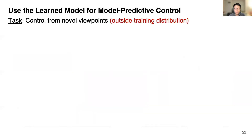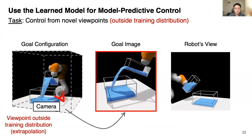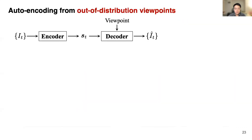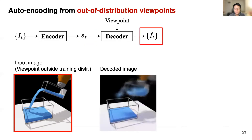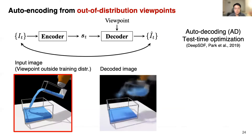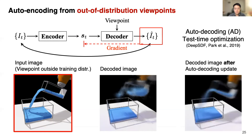Being able to control from novel viewpoints is great, but what about viewpoints outside the training distribution? This requires us to perform extrapolation generalization. Going back to the auto-encoding process: when we encounter out-of-distribution images, the image goes through the encoder and gives an amortized estimation of the state S_T. When decoded directly from this amortized estimation, the results are not ideal and depict different 3D contents from the ground truth. To update S_T and make it better at describing the underlying 3D contents, we employ an auto-decoding test-time optimization technique. Specifically, we compare the input image I_T with the reconstructed image and backpropagate the gradients with respect to the representation S_T to iteratively update it.